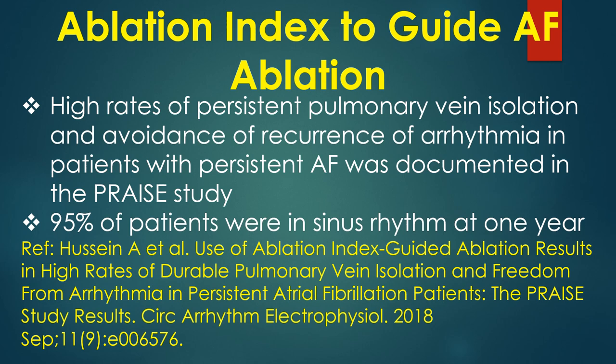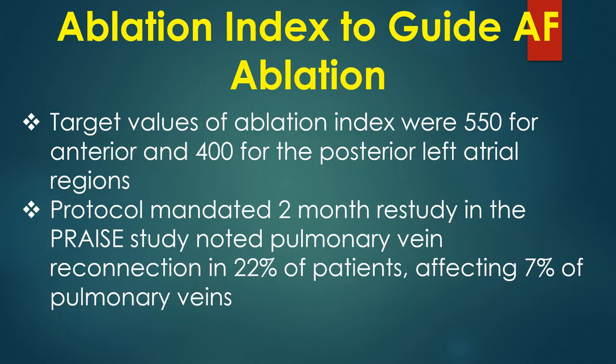High rates of persistent pulmonary vein isolation and avoidance of recurrence of arrhythmia in patients with persistent AF was documented in the pre-study. 95% of patients were in sinus rhythm at 1 year. Target values of ablation index were 550 for anterior and 400 for the posterior left atrial regions. Protocol-mandated 2-month re-study noted pulmonary vein reconnection in 22% of patients, affecting 7% of pulmonary veins.